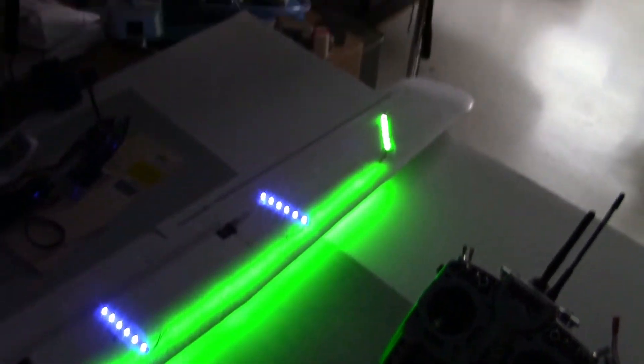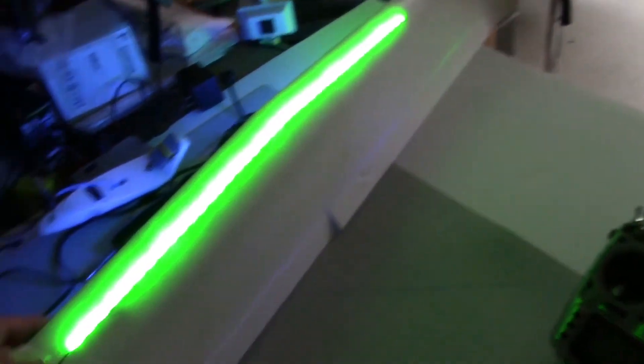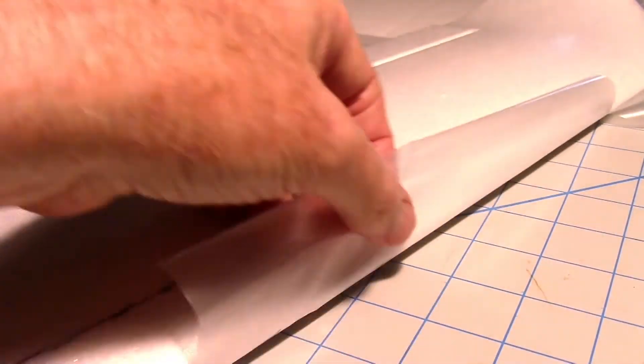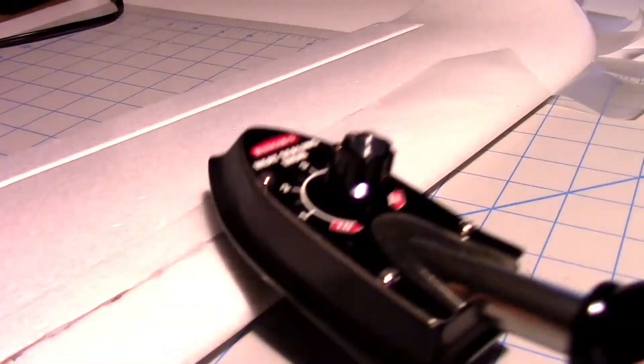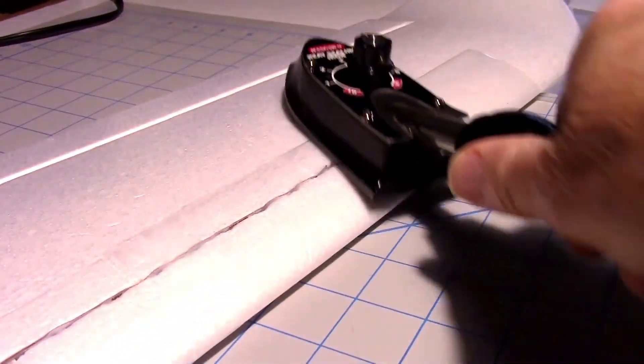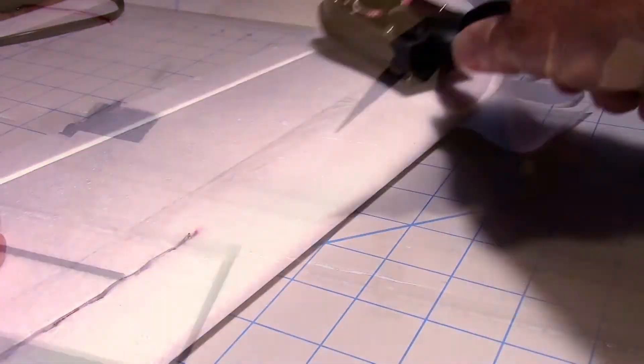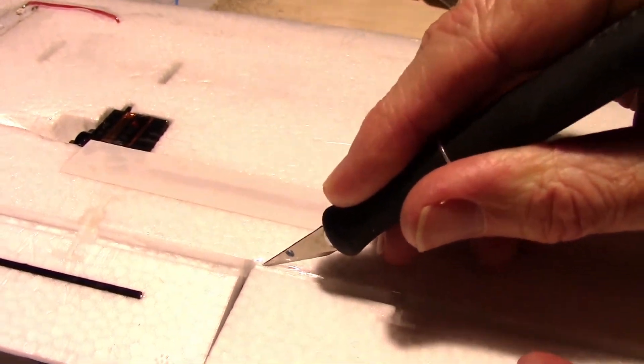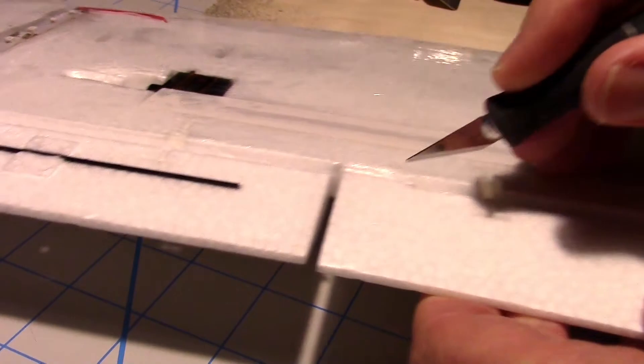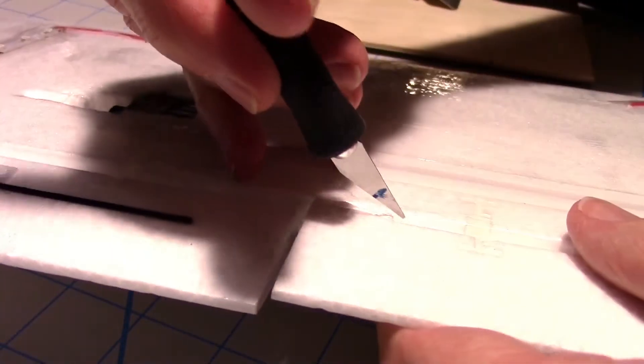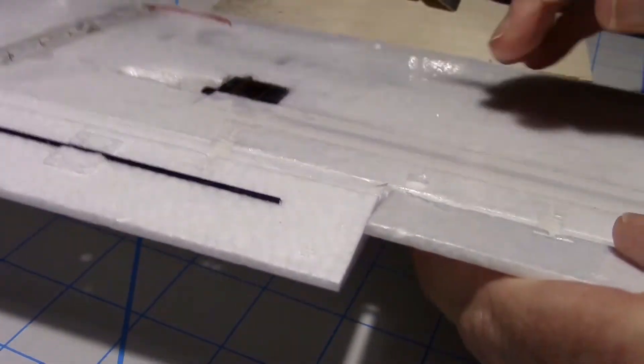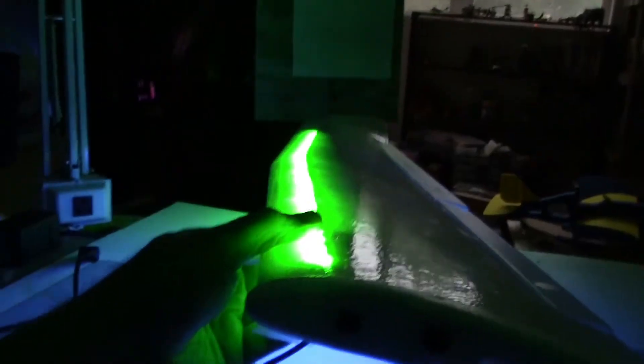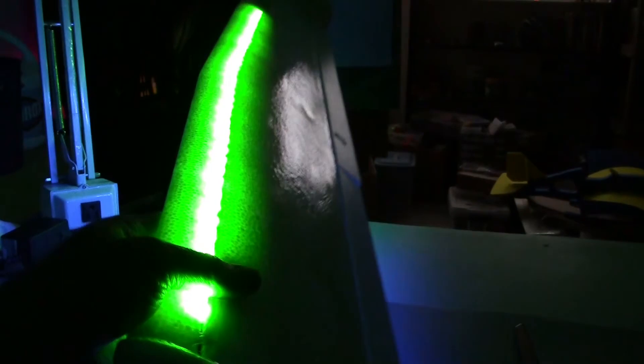Just finishing up laminating the wings. I'm putting the lamination right over the top of the LEDs here so that seals them in. No water can get in there and it makes a nice smooth surface for the air to go over. Now just cutting the flaps loose on this angle on this side.